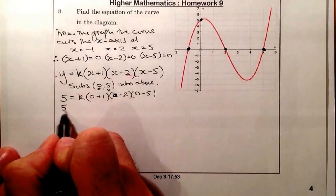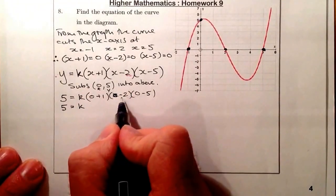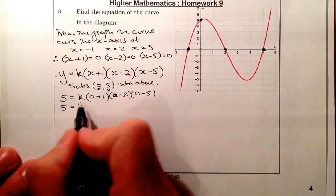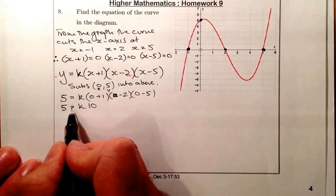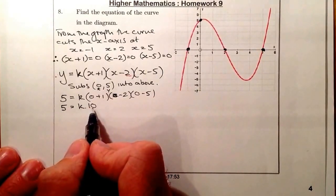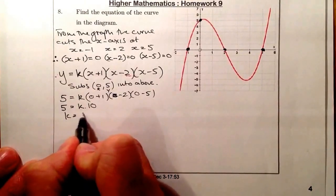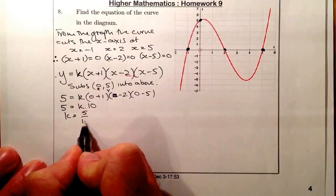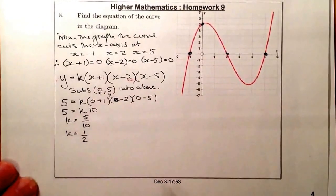So here I've got the k. Multiplying these together, the two negative numbers are going to multiply out with the 1 to give me a 10. So what that is is 5 is equal to 10k. So what I'll do is divide this side by 10. So k is going to be equal to 5 over 10. So k is equal to, simplify down, a half.